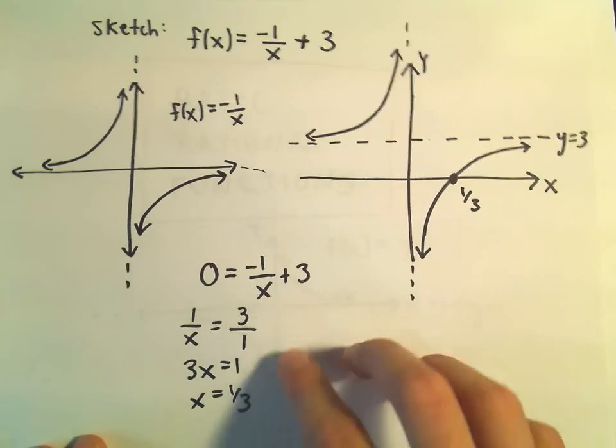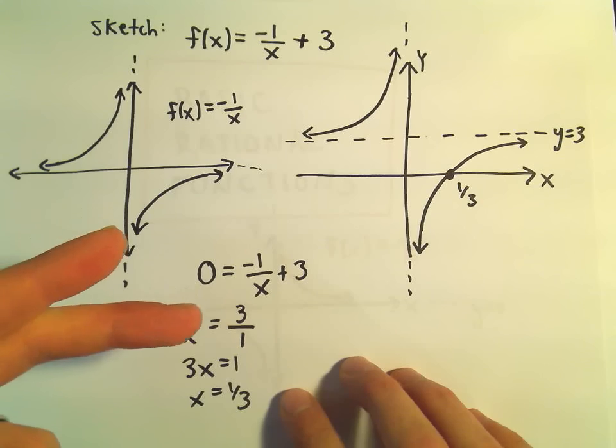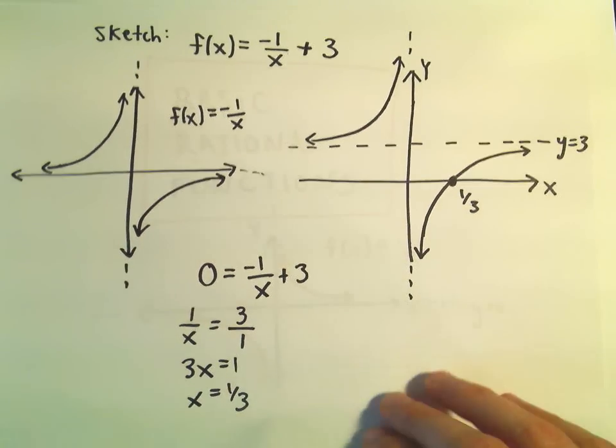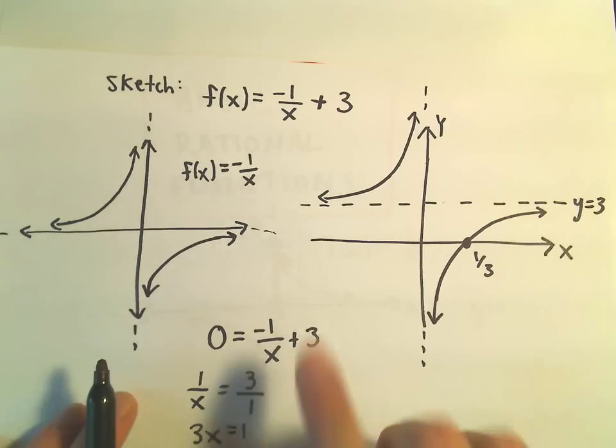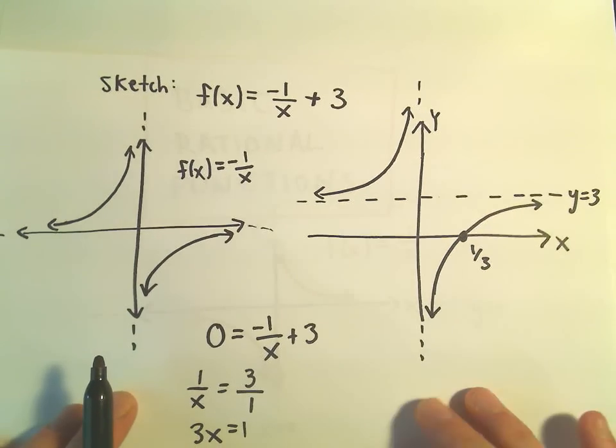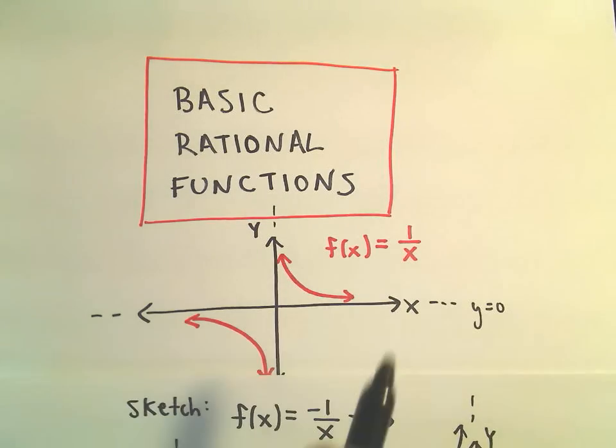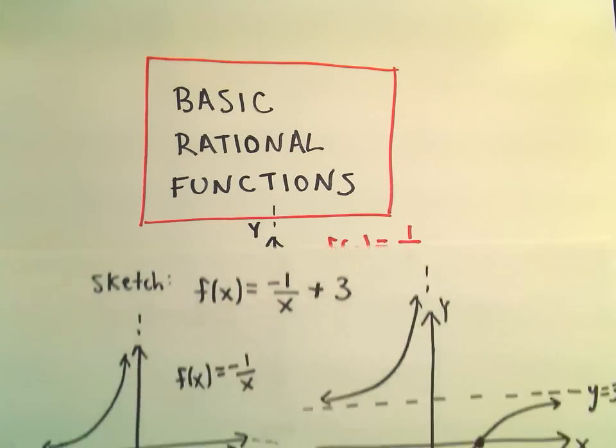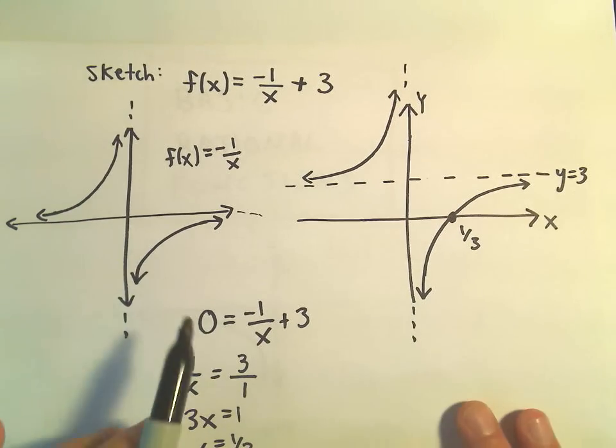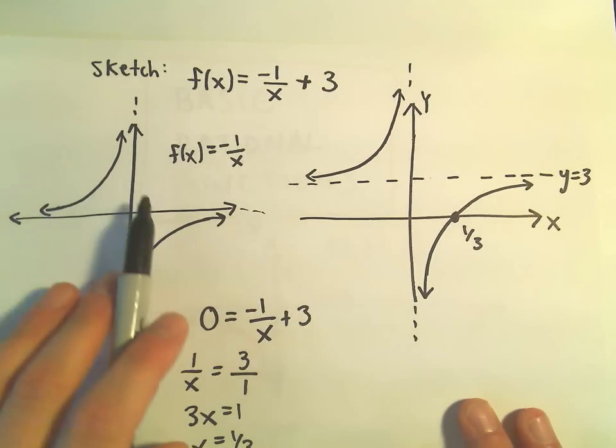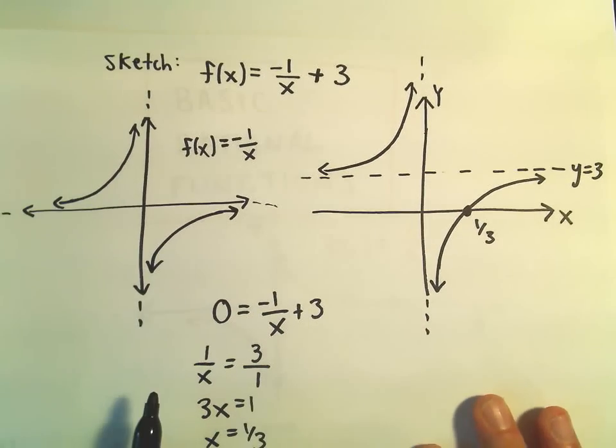And now we've got our basic graph. Just again, kind of reflect the 1 over x graph and move it up. So, again, you could always plot points and get this general shape. But this basic graph, 1 over x, is a useful graph to know so that you can kind of do all these shifting and moving around of it to help you get new graphs.